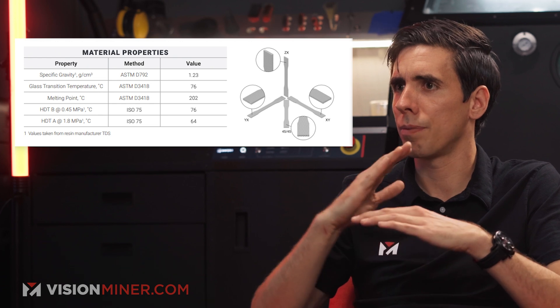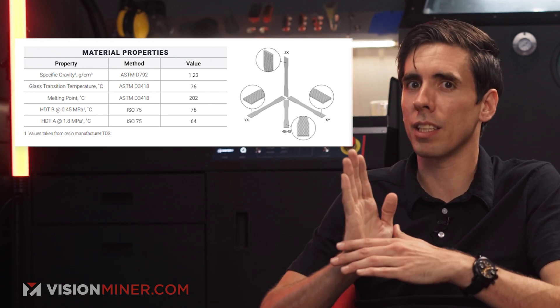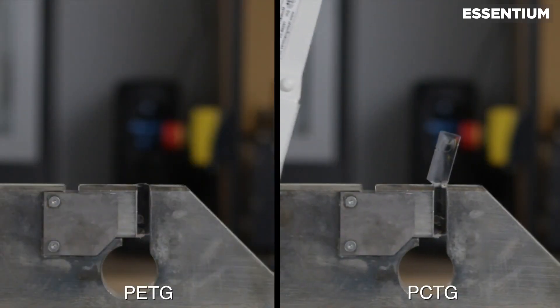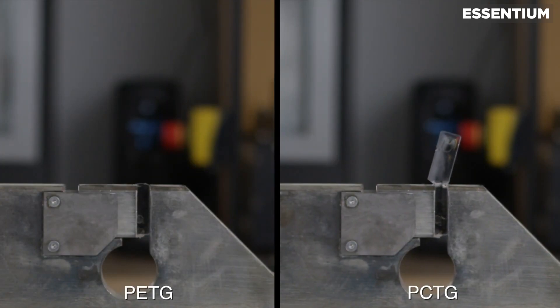There's only one company I'm aware of — Sinterit — that actually provides four different orientations on their technical data sheet: X, Y, 45-degree angle, and Z. That's where you see something like PCTG being almost just as strong in the Z axis, whereas something like CF nylon or 9085 printed in FDM through an extruder is going to be much weaker in the Z axis orientation.